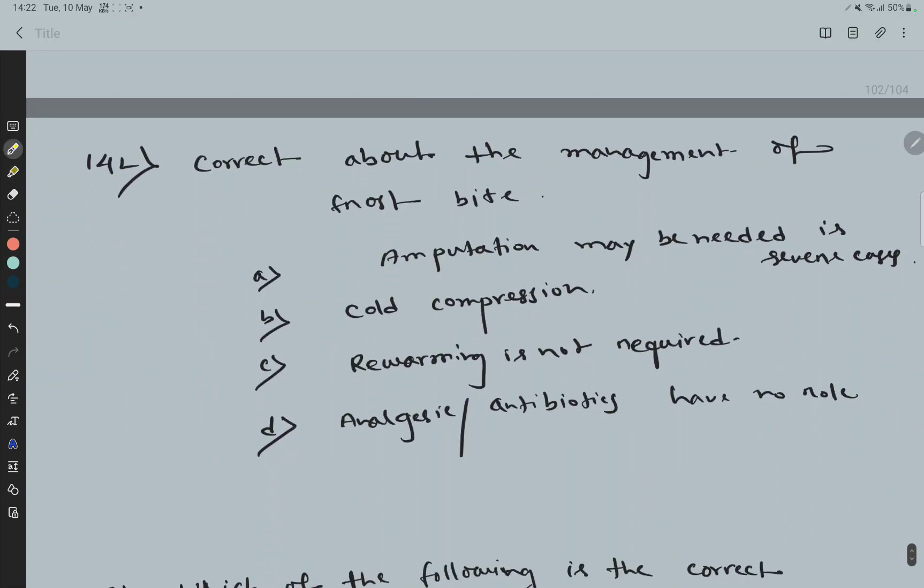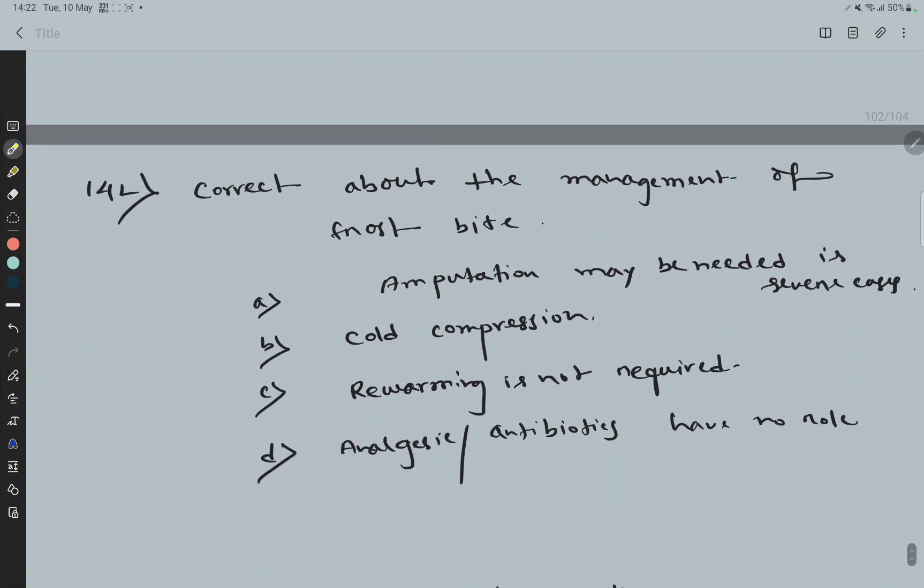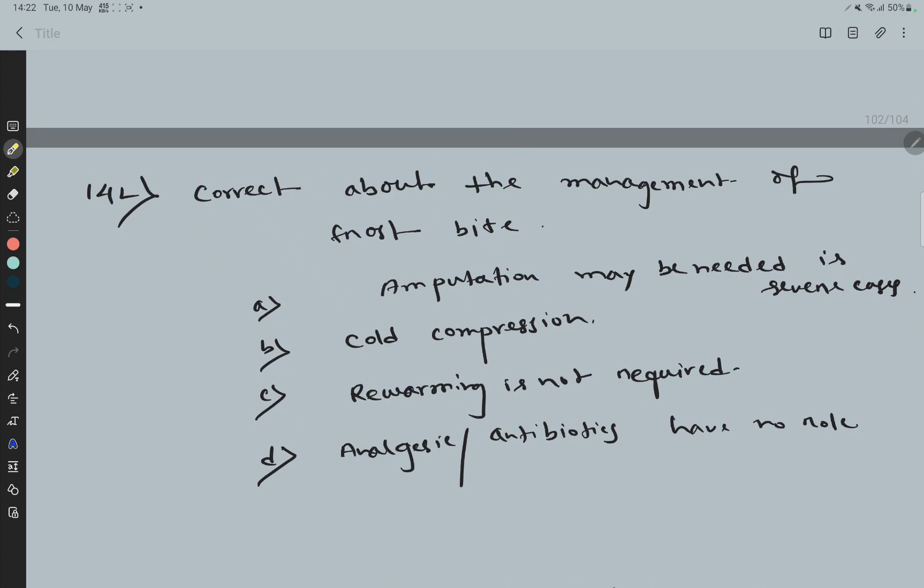Question 142: Correct about the management of frostbite. Options: A, Amputation may be needed in severe cases; B, Cold compression; C, Rewarming is not required; D, Analgesic and antibiotics have no role. The correct option is Amputation may be needed in severe cases.